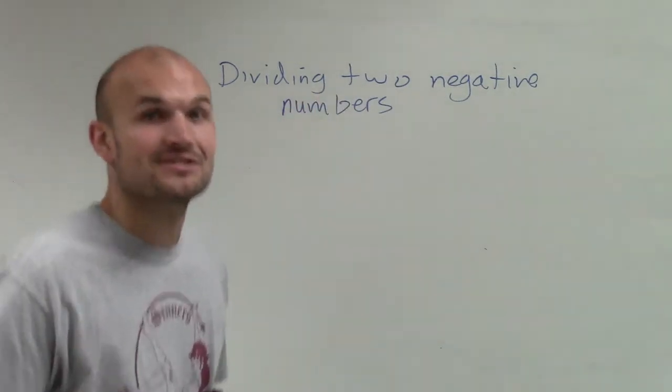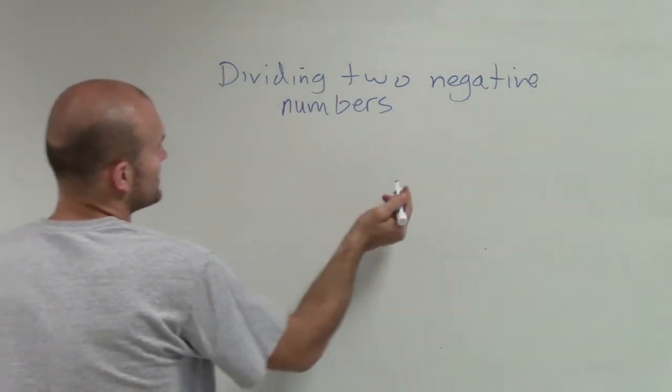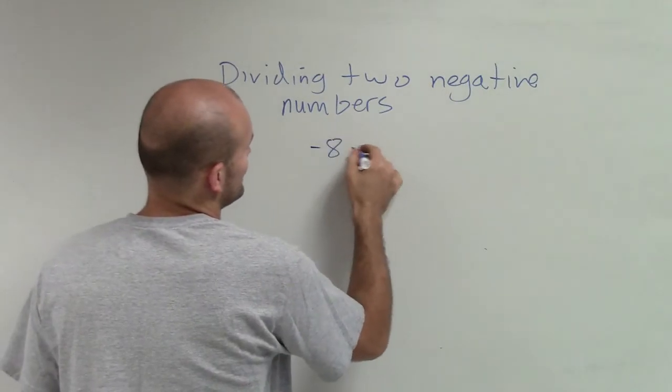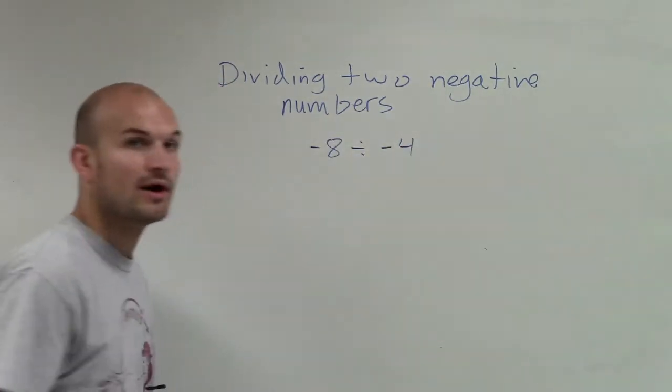OK, real quick, dividing two negative numbers. So let's take negative 8 divided by negative 4.